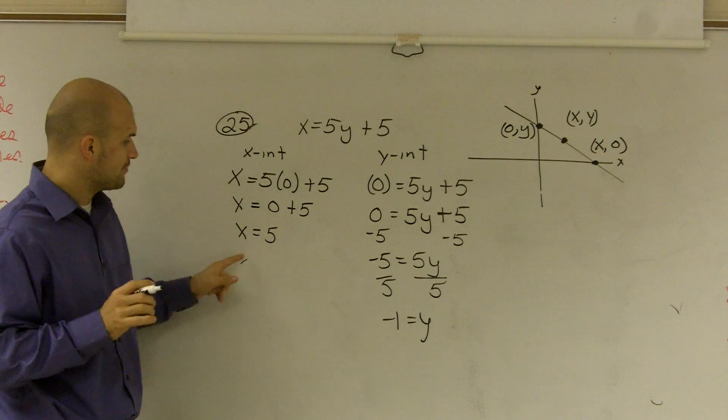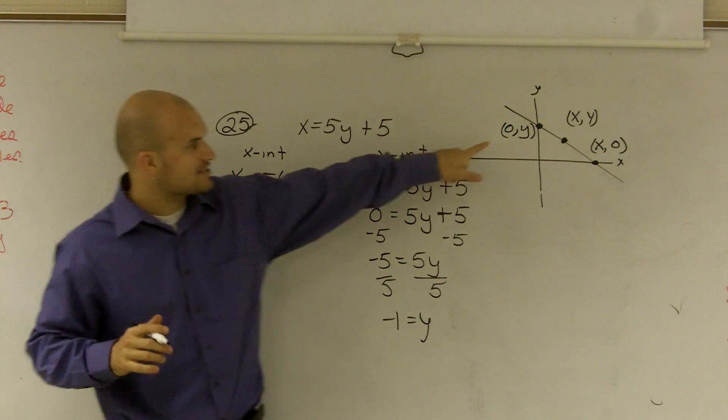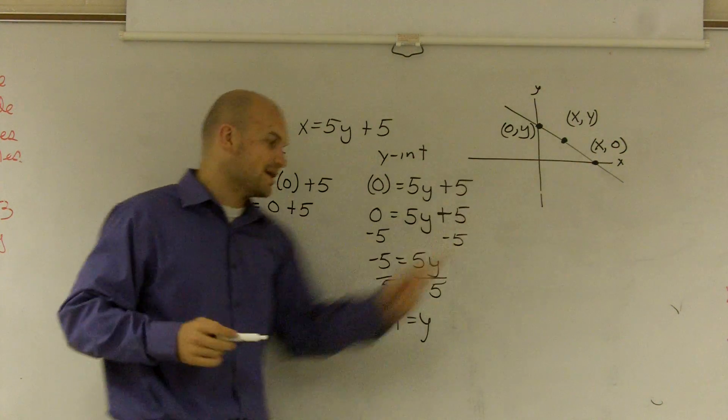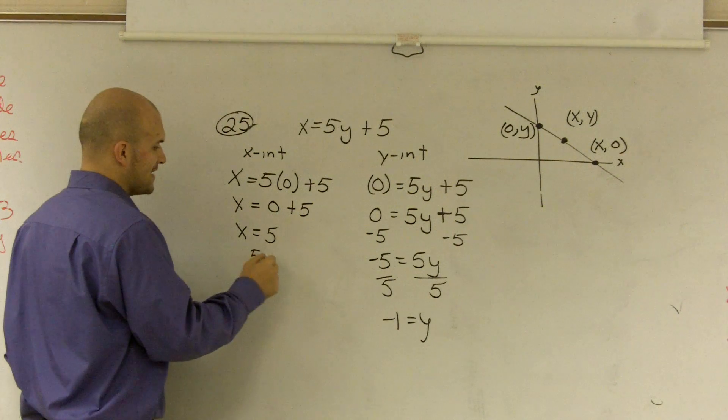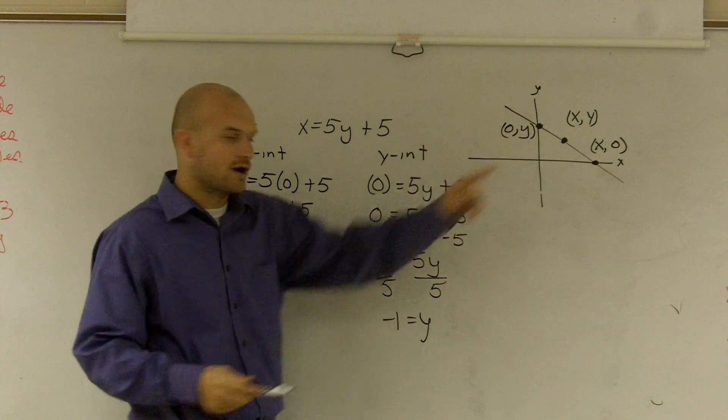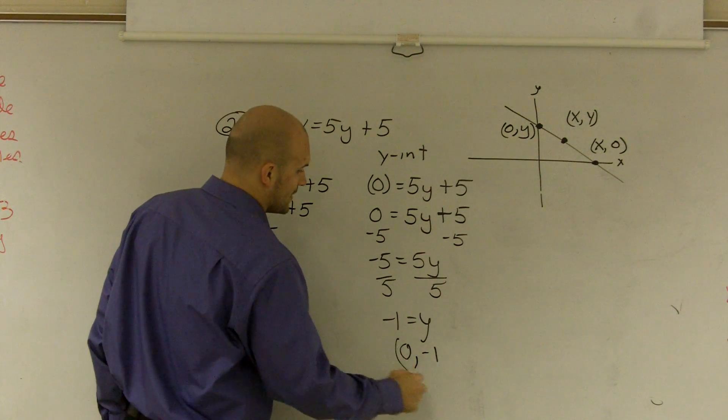Then what I do, ladies and gentlemen, is I put these values back as coordinate points. So x equals five over there, so it becomes five comma zero. And over here, my y is a negative one, so this becomes zero comma negative one.